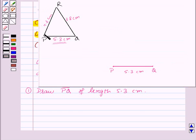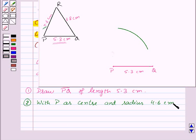Now PR is equal to 4.6 cm. With P as center and radius 4.6 cm, draw an arc like this. Point R will lie somewhere on this arc. So our second step of construction is with P as center and radius 4.6 cm, draw an arc.